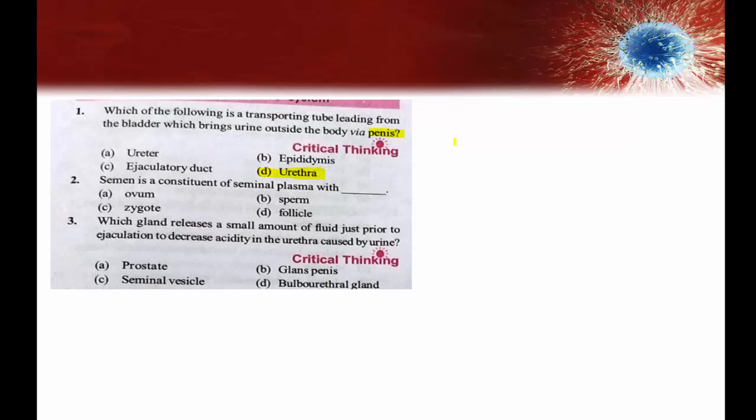Next question: semen is a constituent of seminal plasma with sperms. This is a direct and easy question. The seminal plasma is the combined secretion of the accessory glands of the male reproductive system — the seminal vesicles, prostate gland, and bulbourethral glands. When seminal plasma combines with sperms, that content is called semen. Release of semen is called ejaculation.